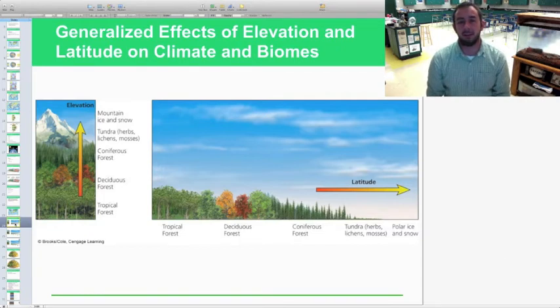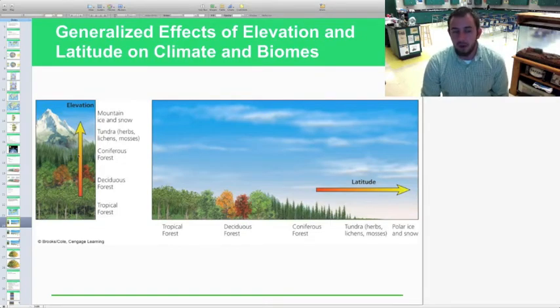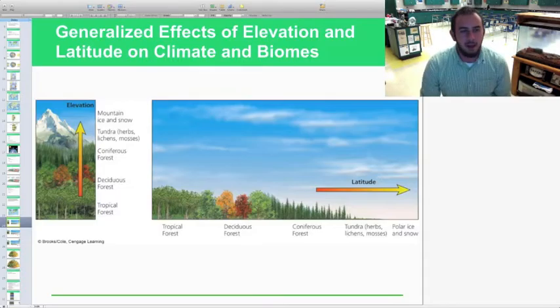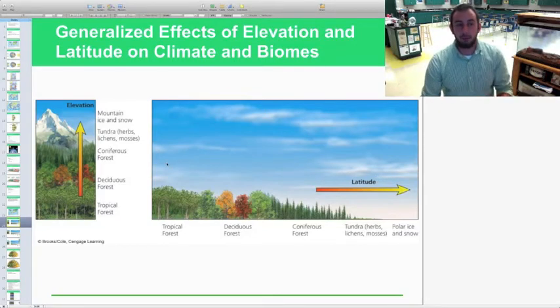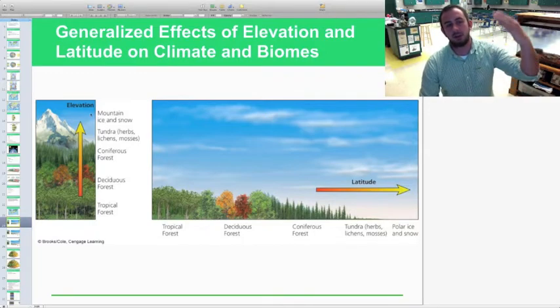Looking at general effects of elevation and latitude on climate and biomes, obviously as you get higher in elevation, usually you get colder because you're high in the atmosphere, not as many heat molecules, so mountains have ice and snow up in the upper elevations, the tundra, you have lichens, then as you get lower in elevation you're going to coniferous forests, deciduous forests, and then even lower you have tropical rainforests.